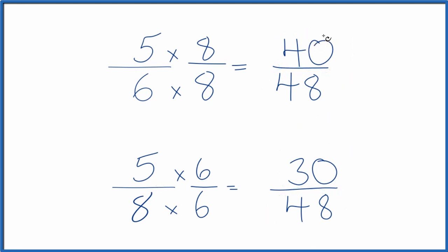So 40 is larger than 30. So 40/48 is larger than 30/48. And since these are equivalent fractions, 5/6 is larger than 5/8.